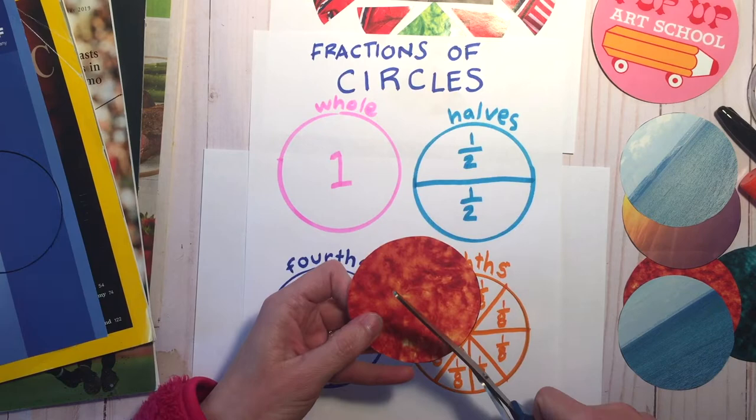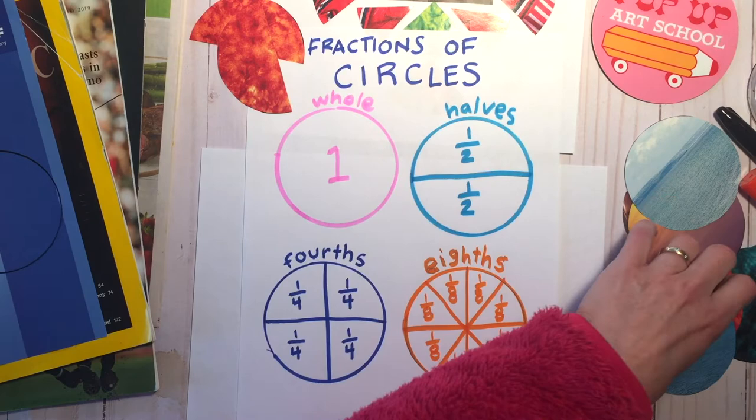All right, so first thing I'm going to do is I'm going to do halves. So just take your scissors, cut that circle in half. Put those to the side.